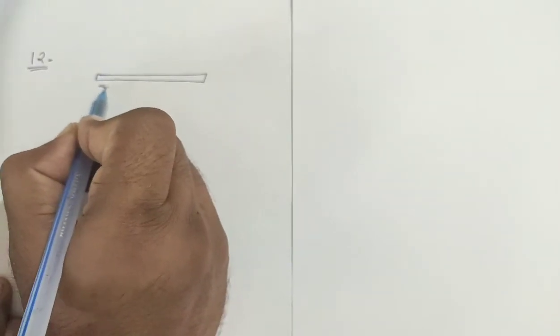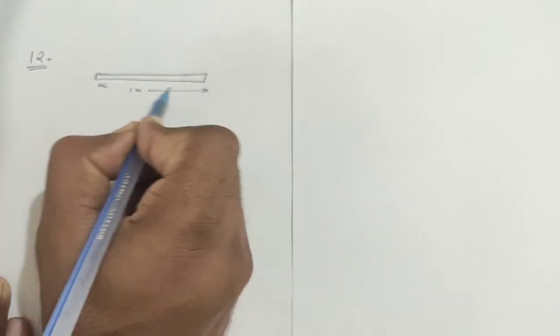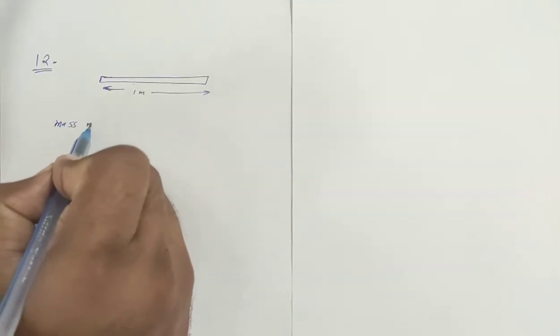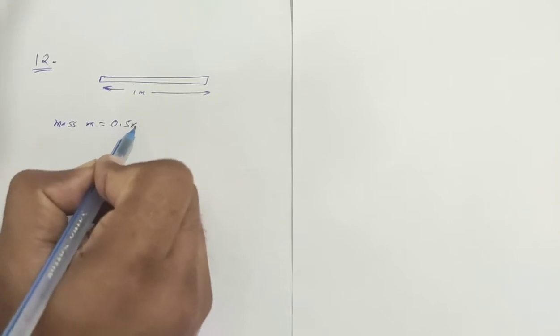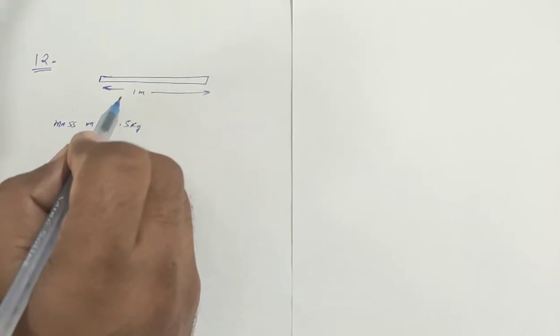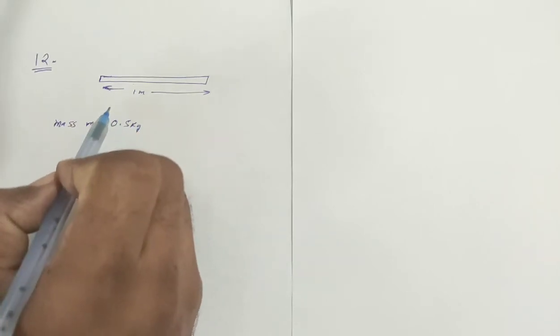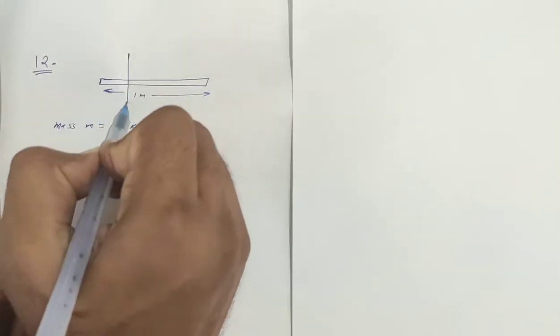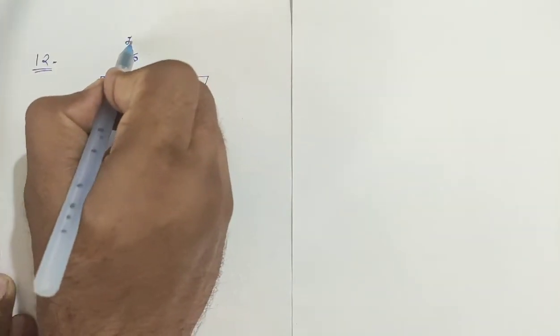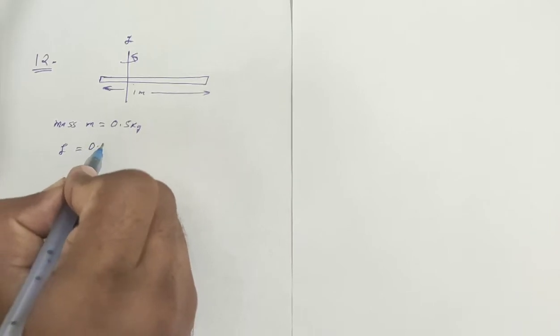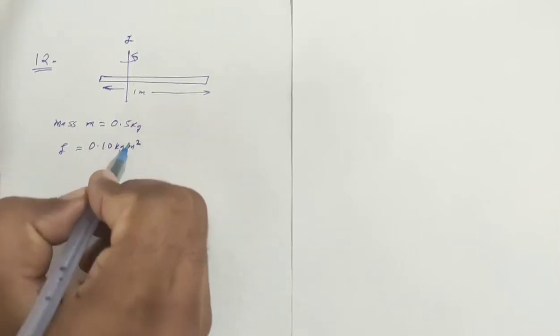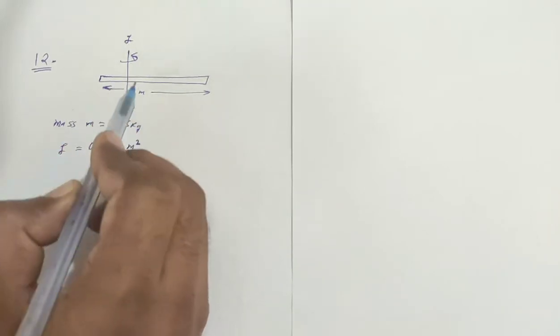Mass given is 0.5 kg and the axis is perpendicular to this rod, and we don't know where it is passed from. The moment of inertia is 0.10 kg meter square. This is the moment of inertia given. Now we are asked the distance from the center.